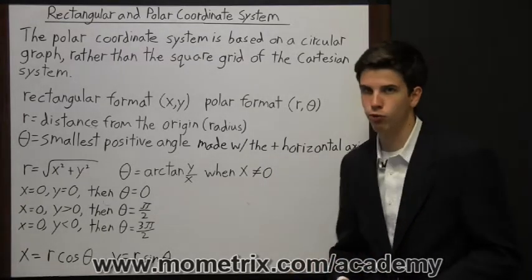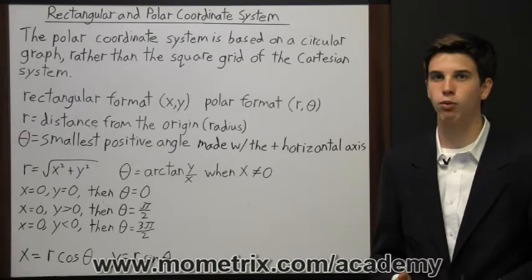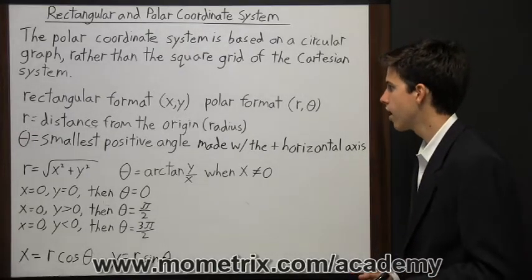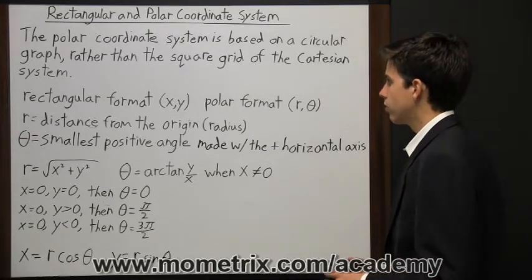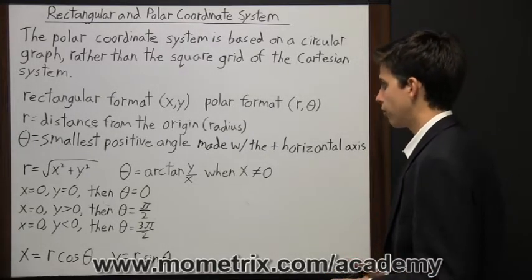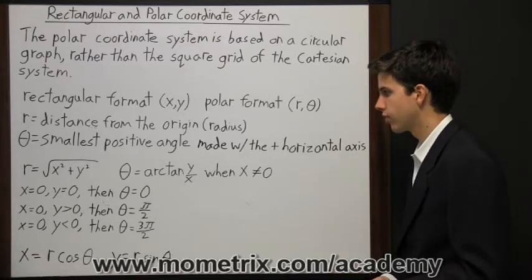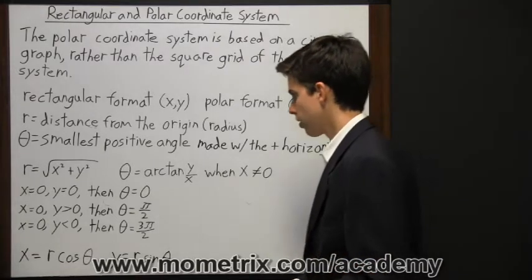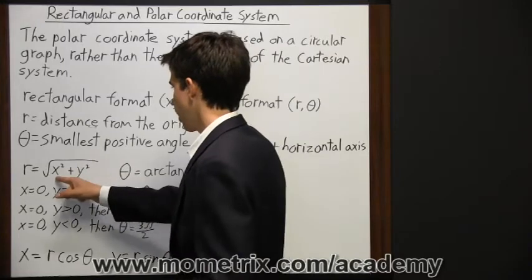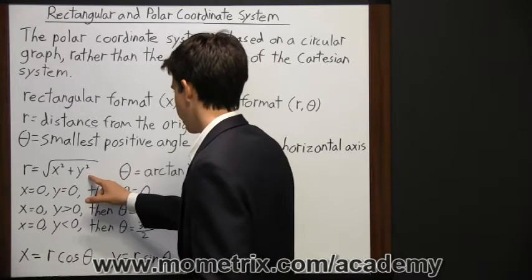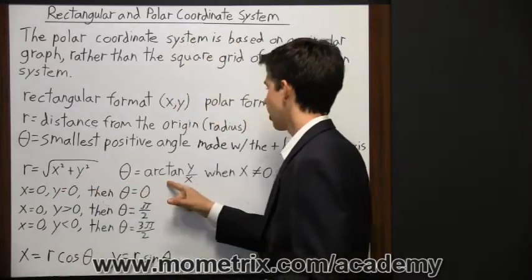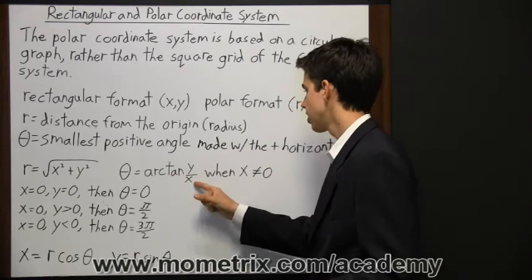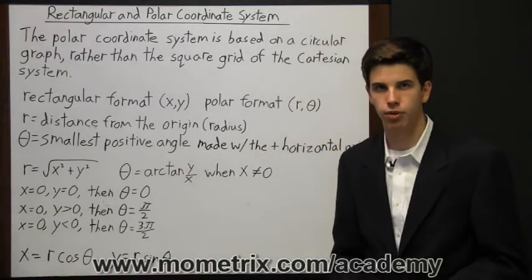If we have rectangular format and polar format, we have to have a way to convert between the two. To find polar format, we separate it into two equations. First we look for r, which is the square root of x squared plus y squared. Then theta is the arctangent of y divided by x, when x does not equal 0.